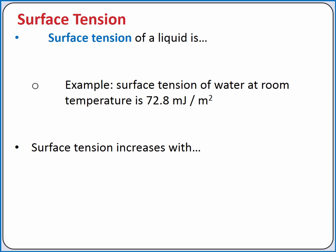For example, the surface tension of water at room temperature is about 72.8 millijoules per meter squared. Surface tension increases with increasing intermolecular forces.